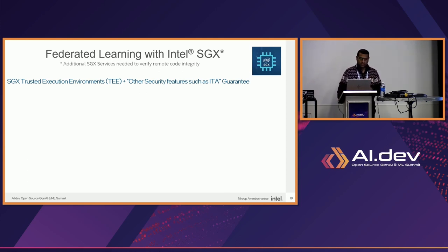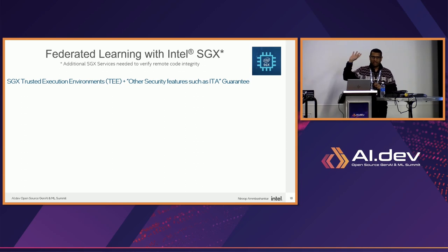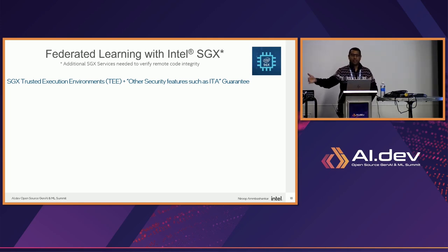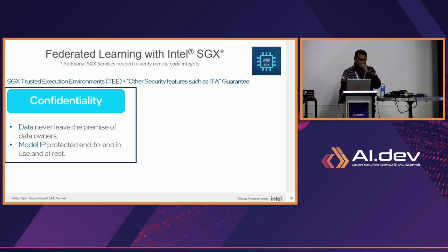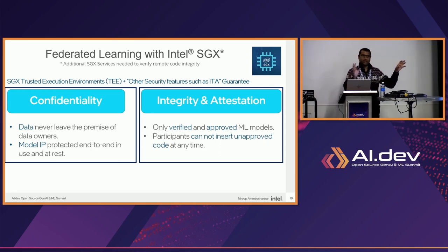ITA — Intel Trust Authority — is an attestation service. It's like asking: hey, I don't know you, but can you verify that the code and everything I have is trusted so you can join the federation and contribute? Intel Trust Authority checks and attests whether a participant is trustworthy and whether the SGX software guard extensions and dependencies are all valid. This is a hardware-level mechanism. It provides data confidentiality — data never leaves the data owner's premises. Model IP is protected end-to-end; only those with the decryption key can access the TEE.